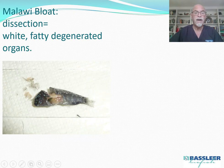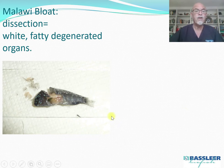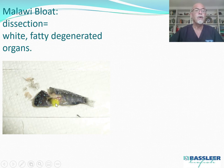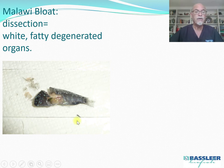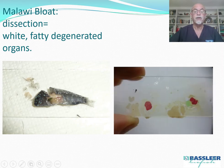If we do a dissection on such a fish, we will see white fatty degenerated organs with a lot of fluid coming outside the fish, making it all wet. And you can see the whitish organs, which is a typical feature.